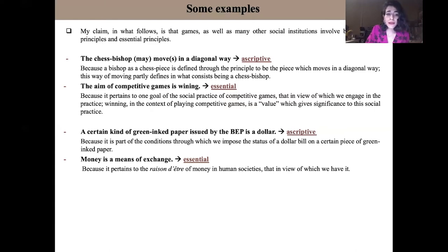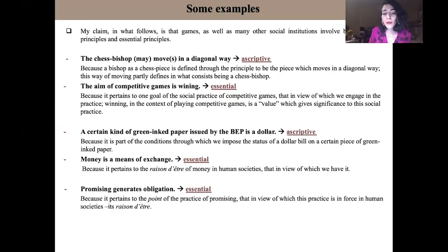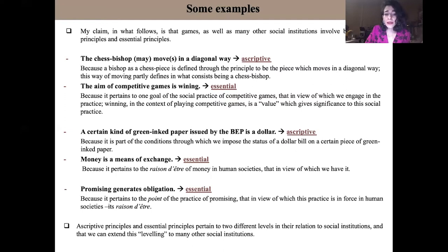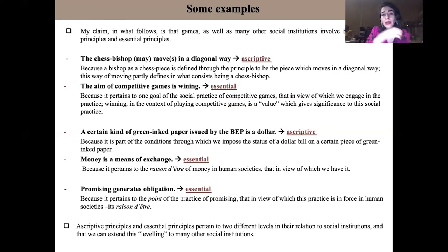Let me take a third and final example, this time from the social act of promising. That promising generates obligation is also an essential principle, because it pertains to the point of the practice of promising — that in view of which the practice of promising is enforced in human society. My claim is that ascriptive and essential principles pertain to two different levels in relation to the constitution of social institutions, and we can extend this leveling to many other social institutions.